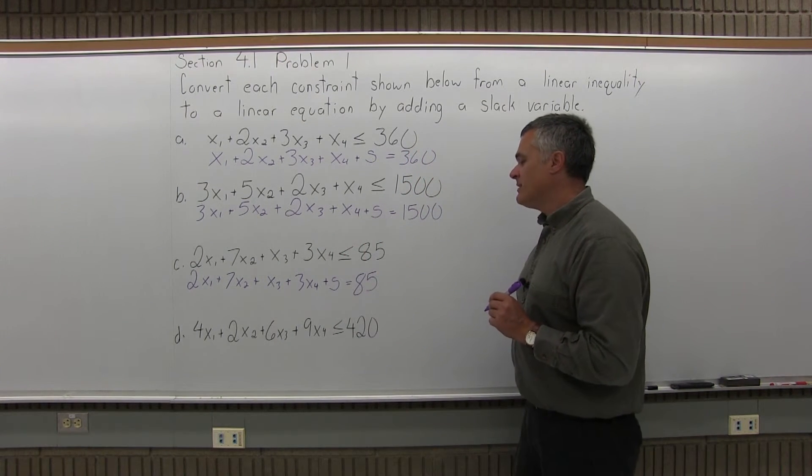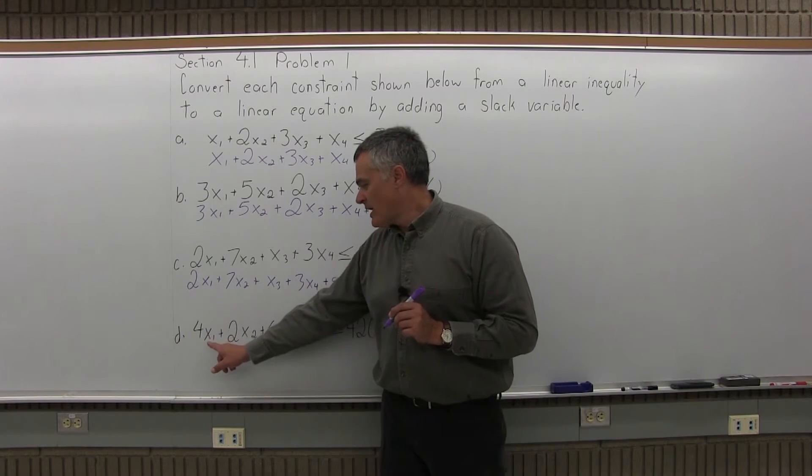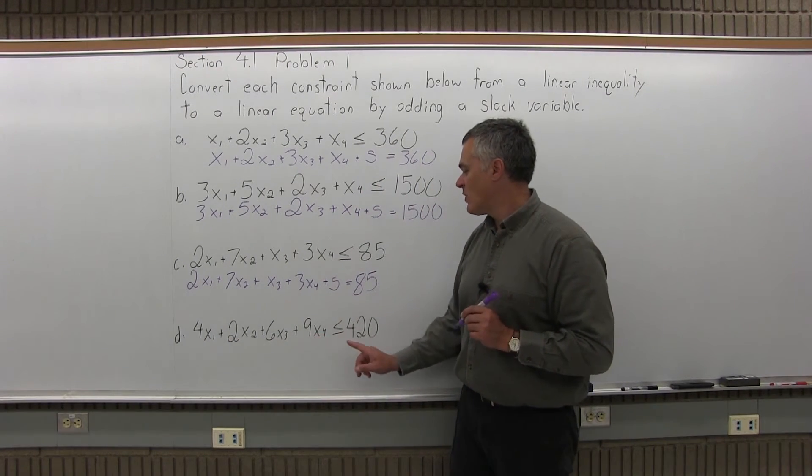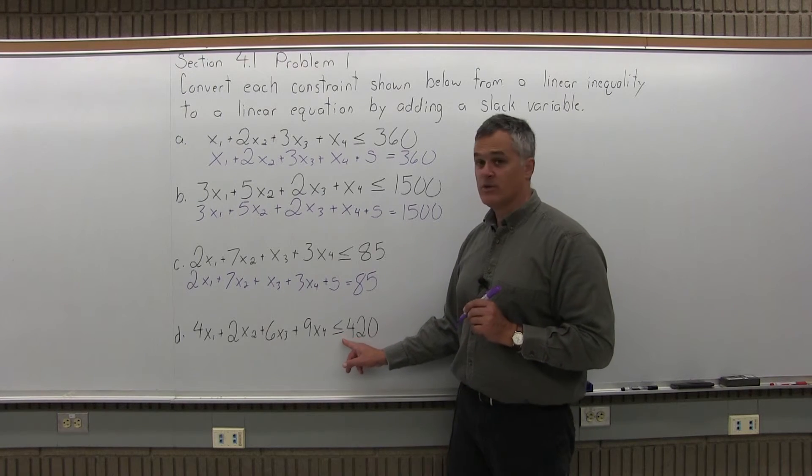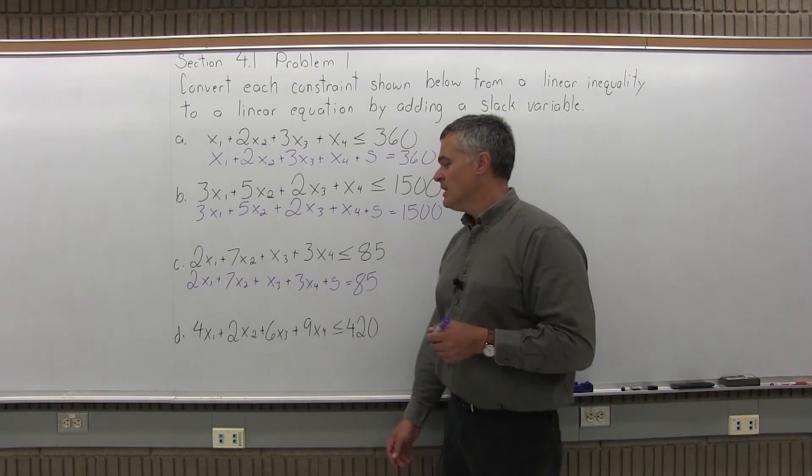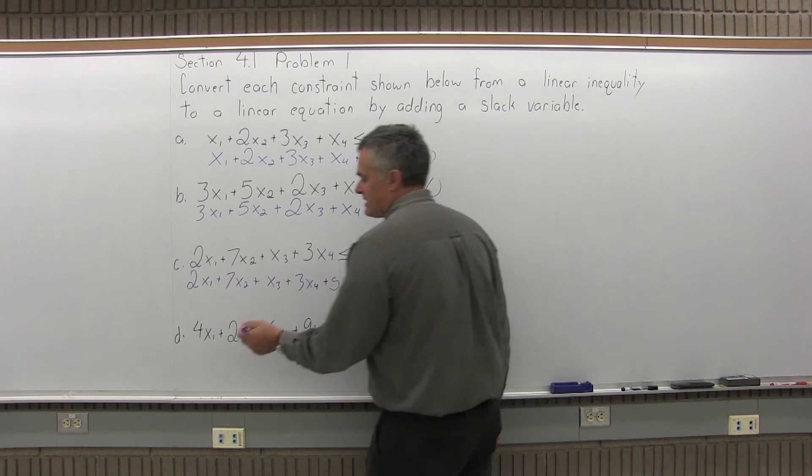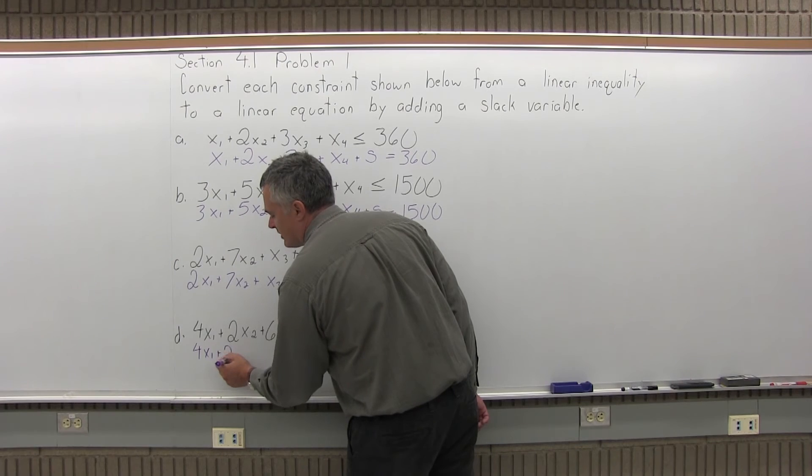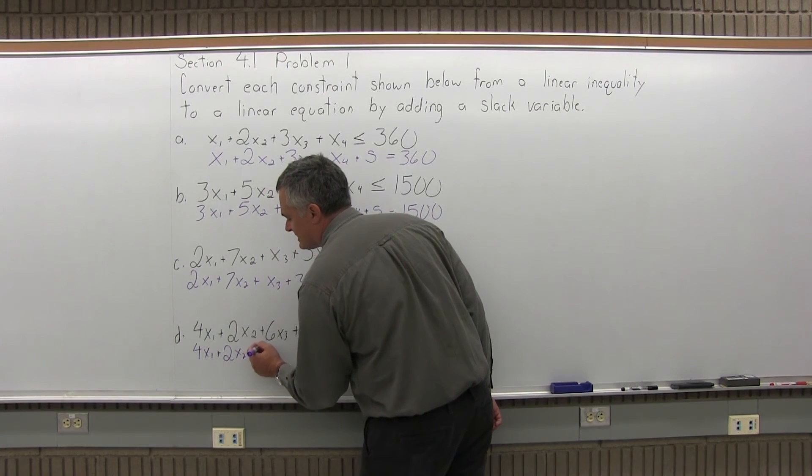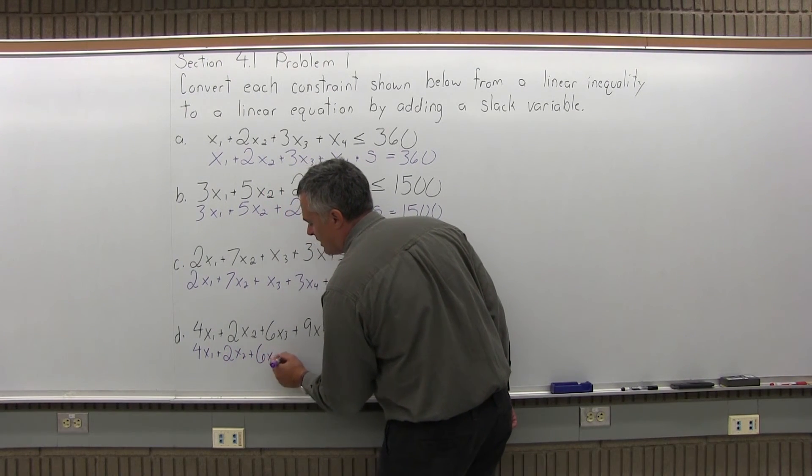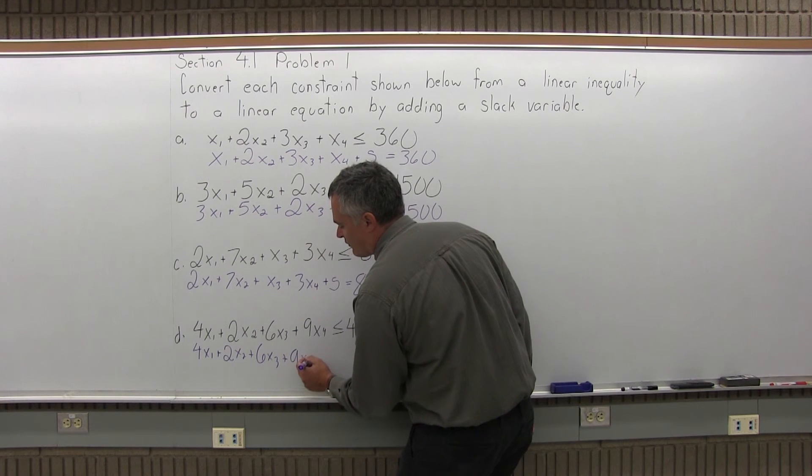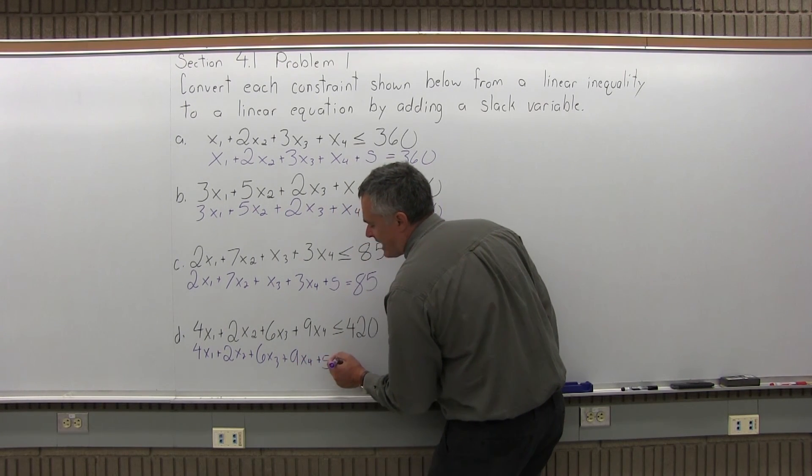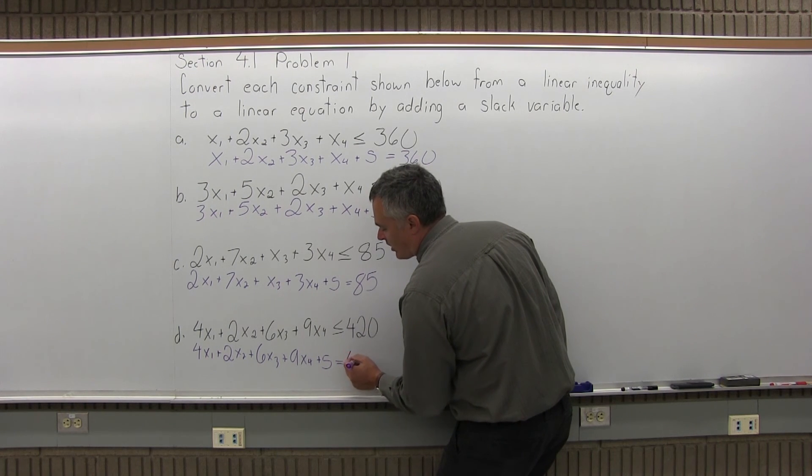And finally, one more, part D. It says convert 4x1 plus 2x2 plus 6x3 plus 9x4 is less than or equal to 420 into an equation. So the values on the left side of the inequality will stay the same. They will stay as 4x1 plus 2x2 plus 6x3 plus 9x4, except now it's going to be plus s, and then it's going to be equals 420.